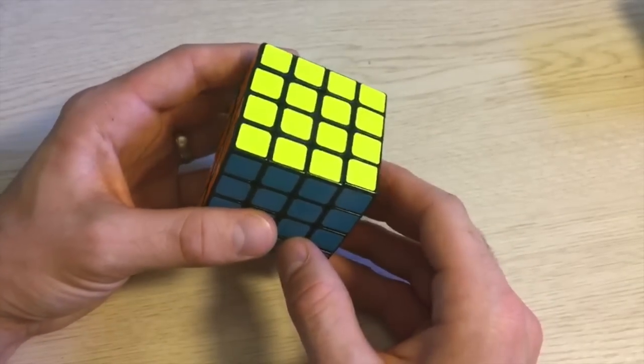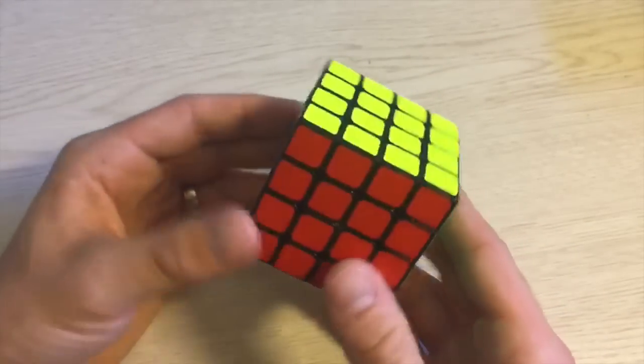You cannot have this in any odd number big cubes because the center piece in the edges holds that spot. This is a much easier algorithm.